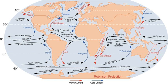More specifically, ocean currents influence the temperature of the regions through which they travel. For example, warm currents traveling along more temperate coasts increase the temperature of the area by warming the sea breezes that blow over them. Perhaps the most striking example is the Gulf Stream, which makes northwest Europe much more temperate than any other region at the same latitude. Another example is Lima, Peru, where the climate is cooler, being subtropical, than the tropical latitudes in which the area is located, due to the effect of the Humboldt Current.